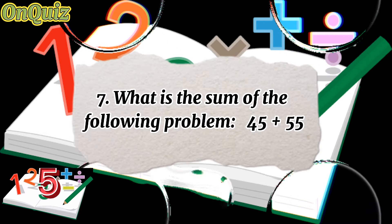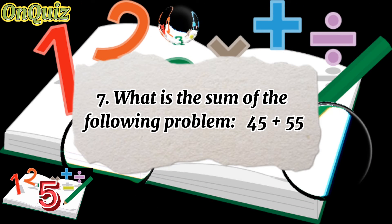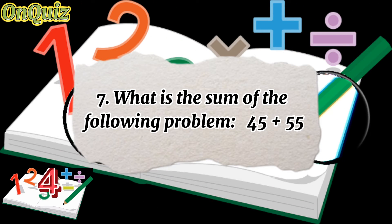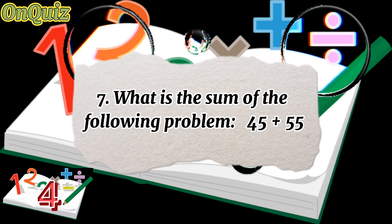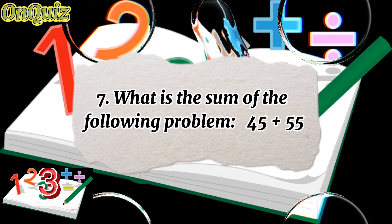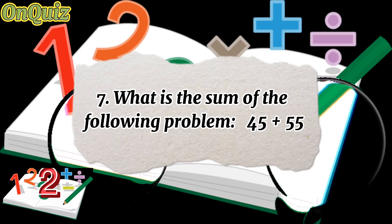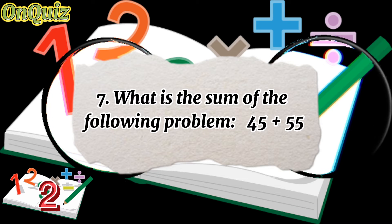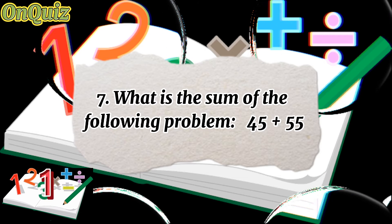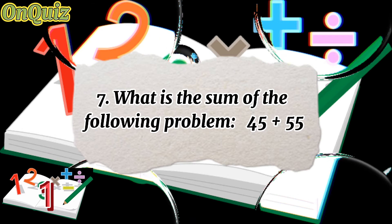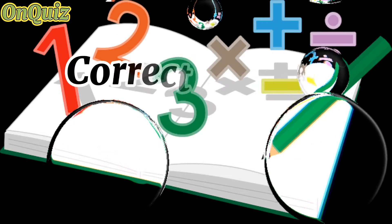Question 7. What is the sum of the following problem? 45 plus 55. Correct answer: 100.